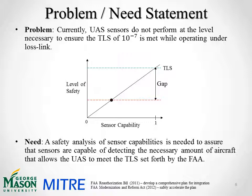This brings us to our problem and need statement. Currently, UAS sensors on board do not perform at the level necessary to ensure the target level of safety of 10 to the negative 7 is met while operating under a lost link. As you can see in our gap diagram, with level of safety on the left and sensor capability on the right, where we currently lie does not meet the target level of safety shown by the green dotted line. In order to close the gap, sensor capabilities must be increased. Therefore, a safety analysis of sensor capabilities is needed to assure that sensors can detect the necessary aircraft to meet the TLS set forth by the FAA.